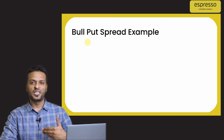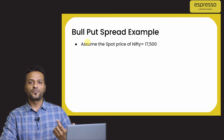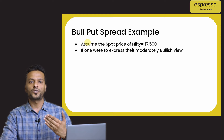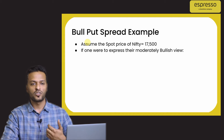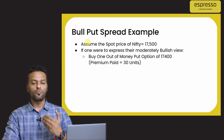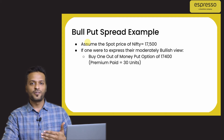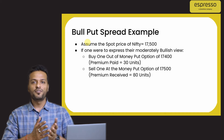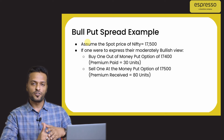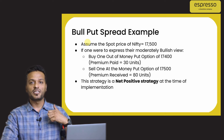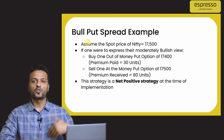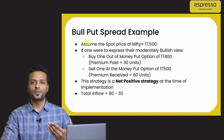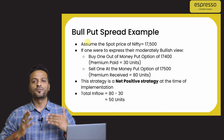Let us understand this strategy with a simple example. Say the spot price of Nifty is around 17,500 and you have a moderately bullish view on the market. You simply buy one out-of-the-money put option of 17,400 and pay a premium of 30 units. To complement that, you sell one at-the-money put option of 17,500 and receive a premium of 80 units. This is a net positive strategy — the total inflow is 80 minus 30, which equals 50 units at the time of implementing the strategy.